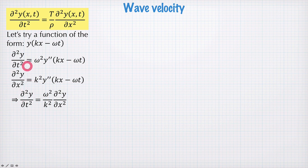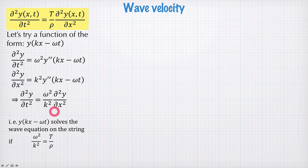Now, from these two equations we can see that the second time derivative of y is equal to the second spatial derivative of y with this factor ω squared on k squared in front. And this equation here is exactly the same as this equation up here, provided ω squared on k squared is equal to tension divided by the linear density.